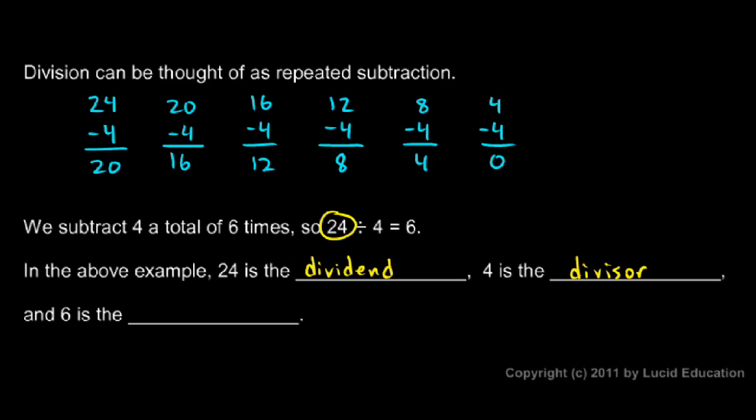Think of the dividend as the number that is getting divided, and the divisor is how many pieces it's getting divided into. The result of a division problem is called the quotient.